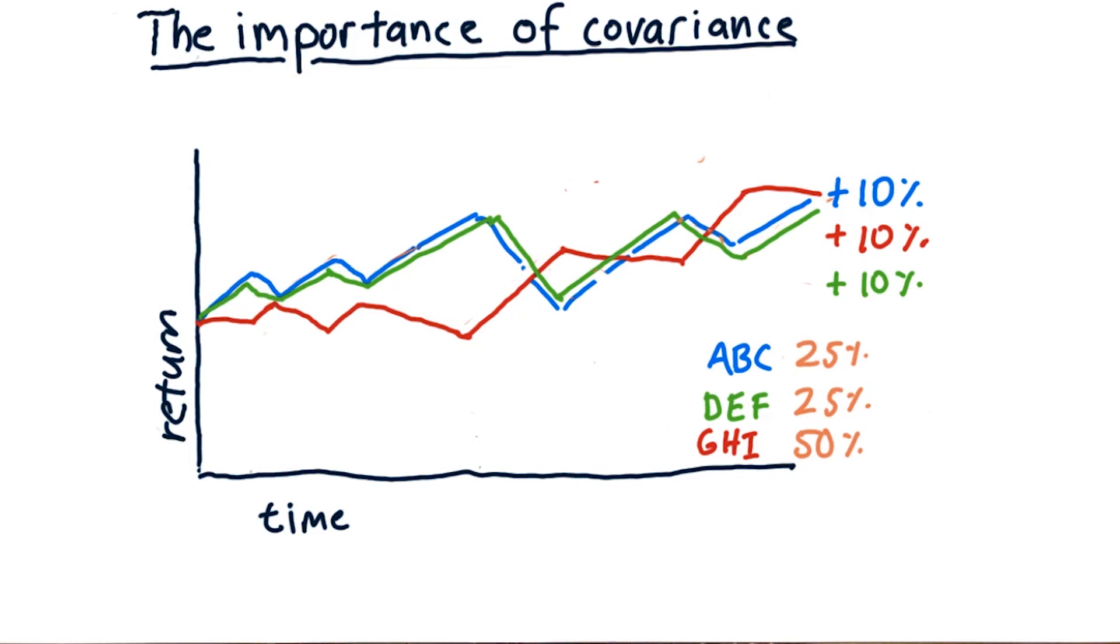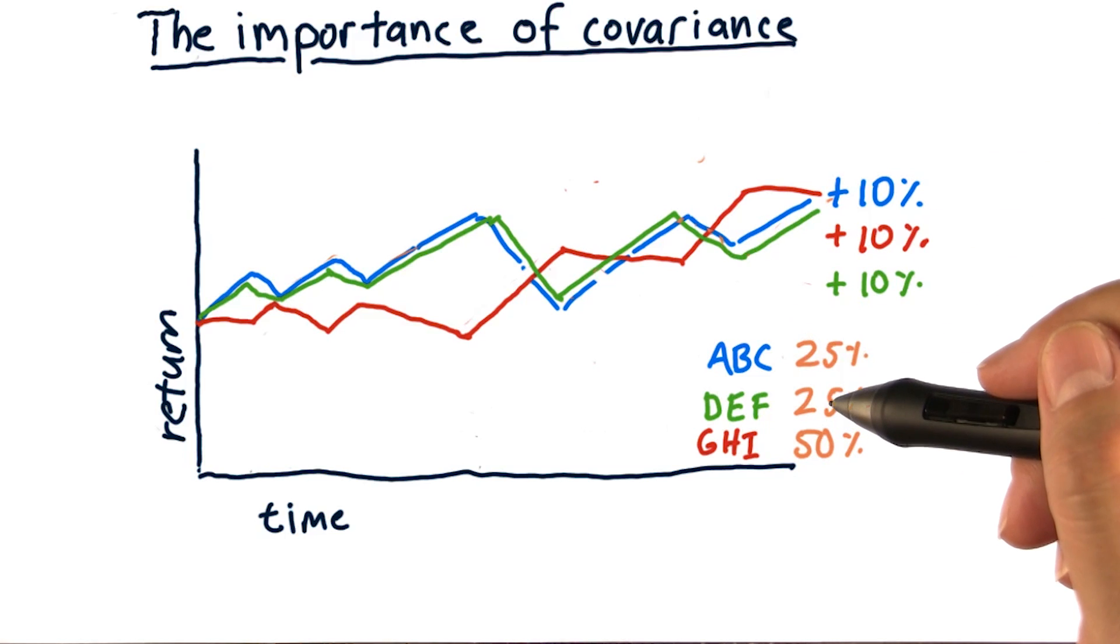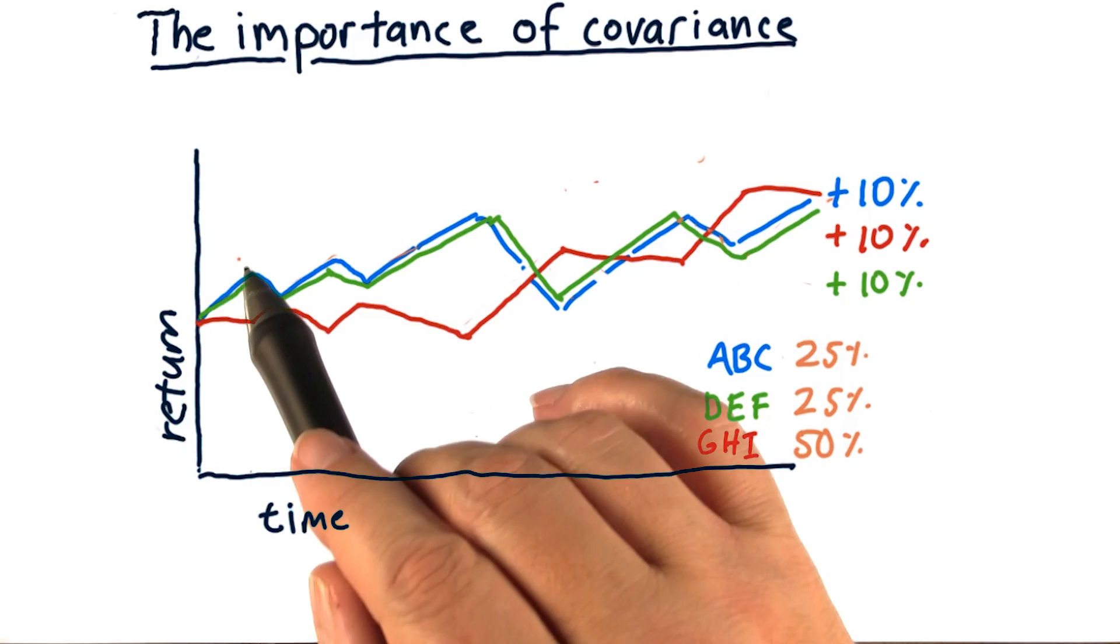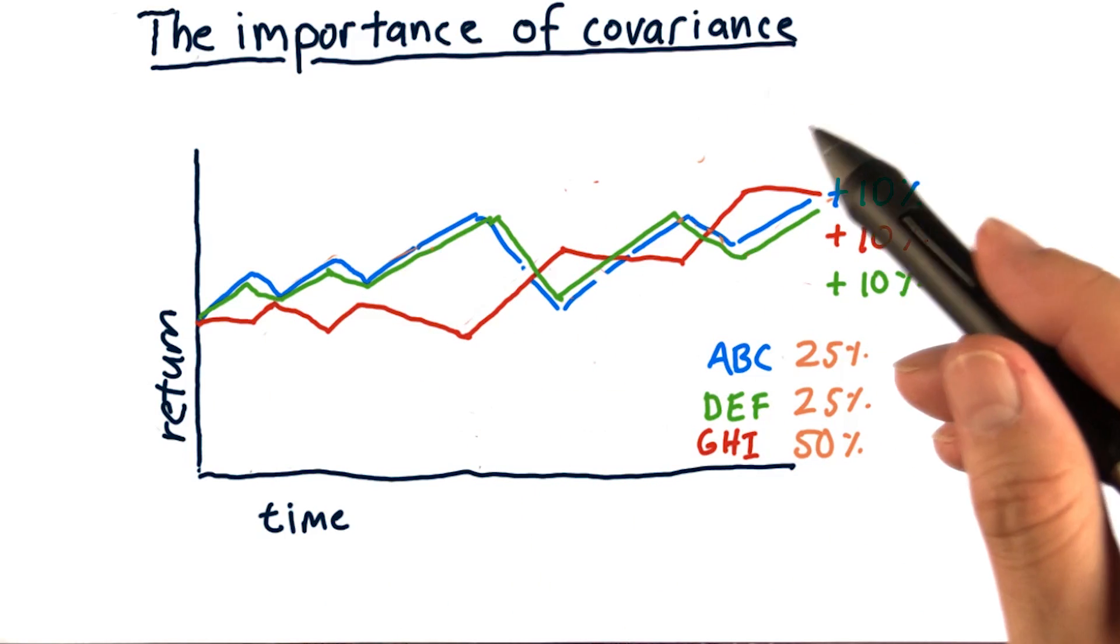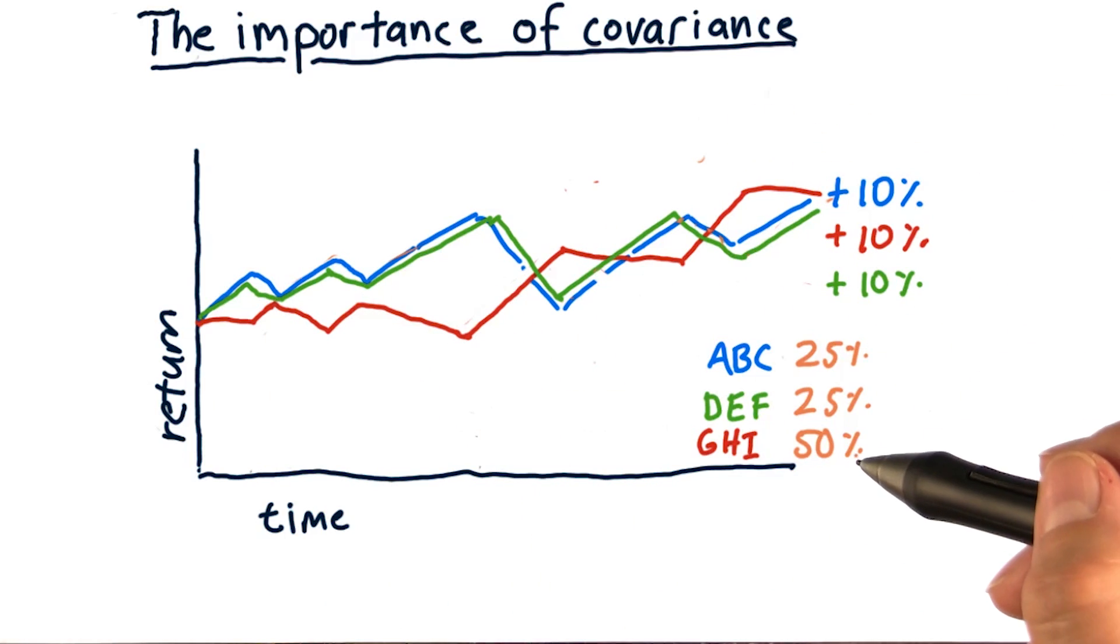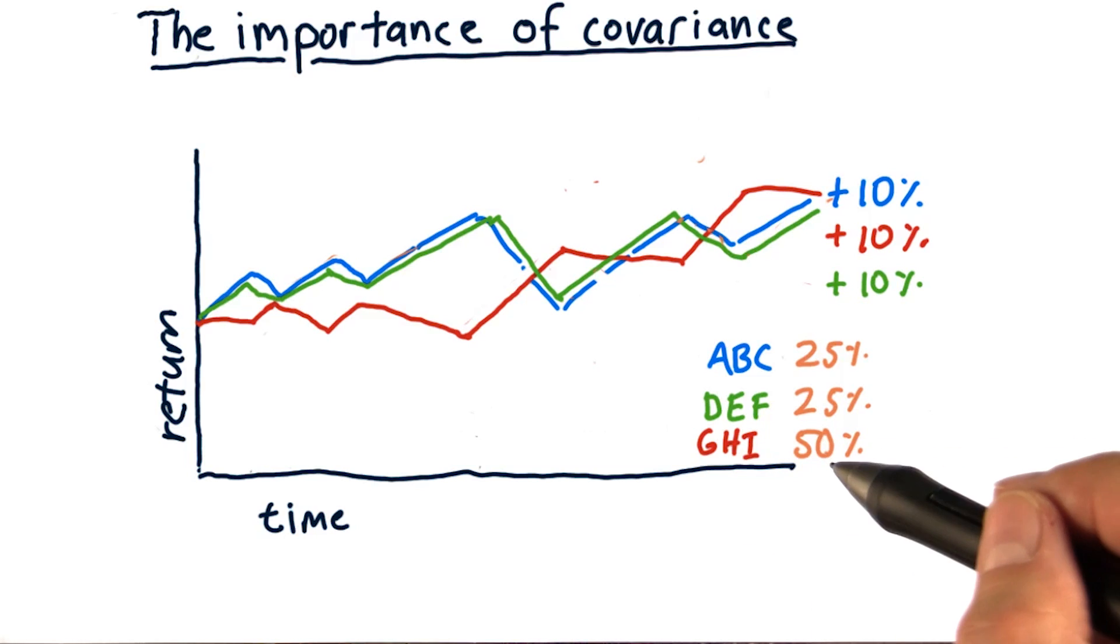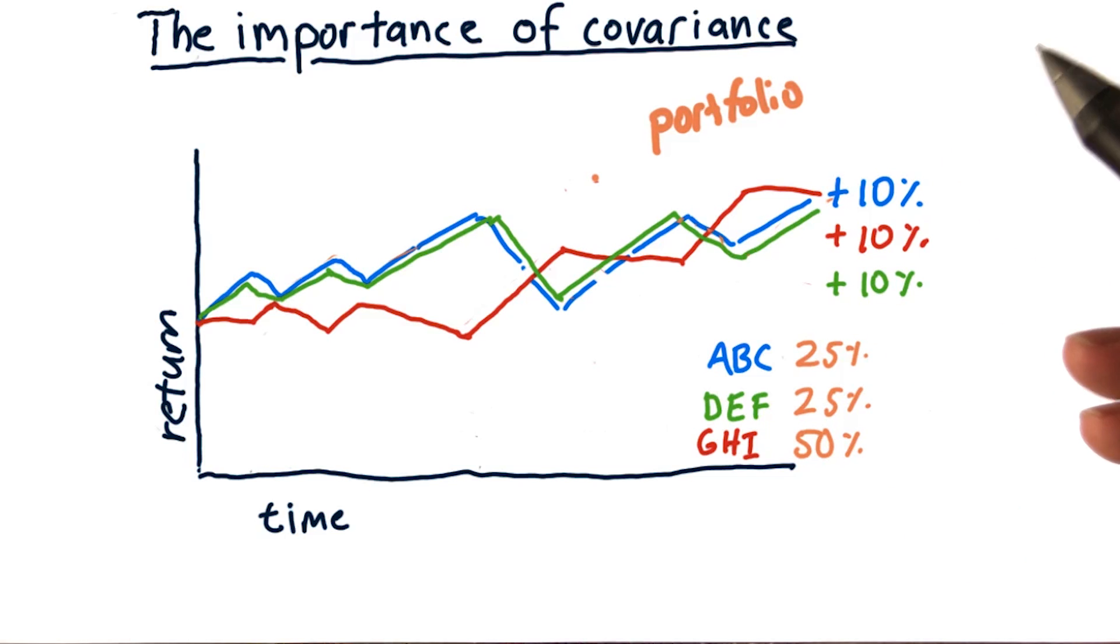What if we try something a little bit different? What if we take 25% of ABC, 25% of DEF? That's going to give us this same motion that we saw here when we combined those two. But we put the rest of it in GHI. So now we're combining an anti-correlated asset with these other two. What's this portfolio going to look like?